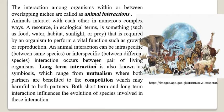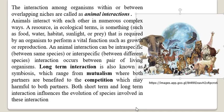Long-term interaction is also observed amongst animals and is a kind of symbiotic association, which ranges from mutualism — where both partners are benefited — to competition, which may be harmful to both partners. Symbiotic association is one in which no one is at harm; either one or both are at benefit.